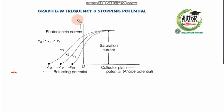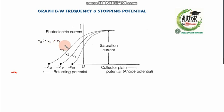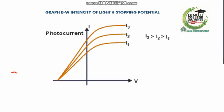This is the graph between frequency and stopping potential. There are three frequencies: ν₁ is the least, ν₂ is smaller, and ν₃ is the largest. The corresponding stopping potentials are V₁, V₂, and V₃. We can say that V₃ is greater than V₂ is greater than V₁, showing that stopping potential increases with increasing frequency.